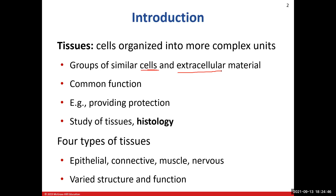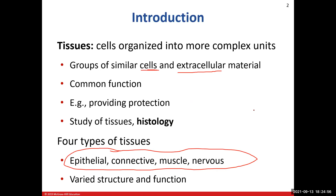If you don't know it by now, you need to have this in your memory right now — there are four tissue types. I keep repeating the same thing in 211 as I do here. I often ask the class the four tissue types because this stuff is going to come back to you in other chapters. Learn it now and you won't have to worry about it later.